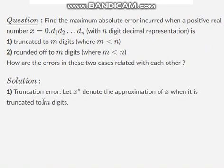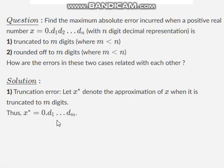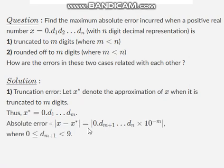Let us denote x* as the approximation of x when it is truncated to m digits. Truncation means we discard all the digits beyond dm. So the approximation x* becomes 0.d1 d2 up to dm. The absolute error obtained in this case is equal to |x - x*| = |0.d(m+1) d(m+2) ... dn| × 10^(-m). Here the first m significant digits are zero after subtraction, therefore we have the exponent minus m.